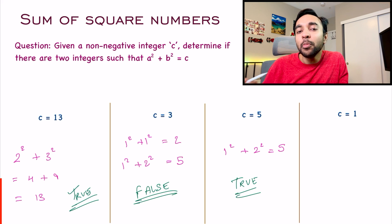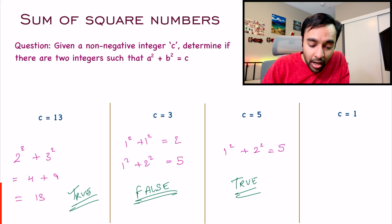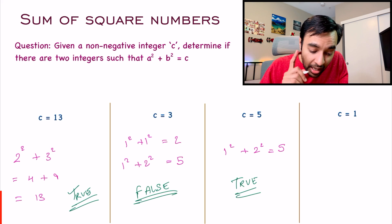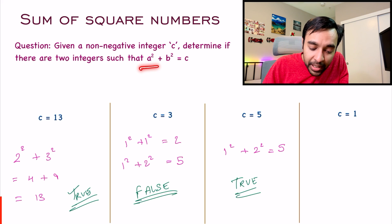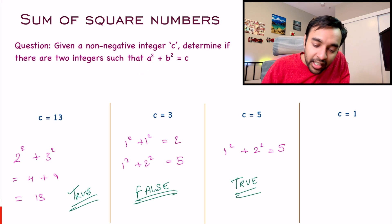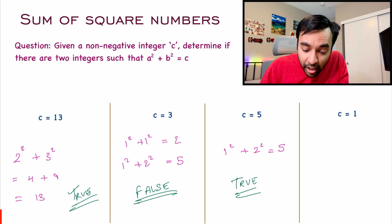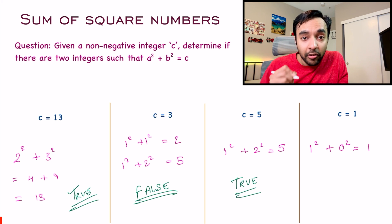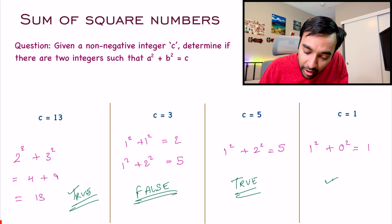And also, you might have some edge cases as well. For example, if you look at the value c is equal to 1. Now, the problem says that a and b, they should be two integers. Zero is also an integer. So that is one thing that you need to take care about. Basically, what we can say is, 1² + 0² equals 1, right? So for the last test case also, you will return true as your answer.